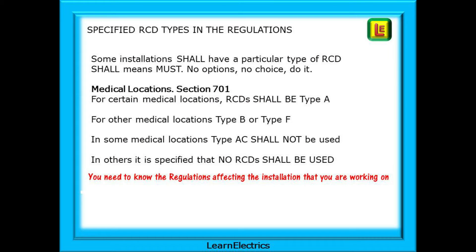The regulations also tell us that some installations shall have a particular type of RCD. 'Shall' means must — no options, no choice, do it. For example, in certain medical locations the RCD shall be type A — no choice. For other medical locations it is a type B or type F. In some other parts of a medical location, type AC RCDs shall not be used — they are not allowed — and even in others it is specified that no RCDs shall be used at all. So you could have different RCD requirements in different parts of just one building.